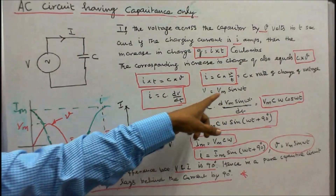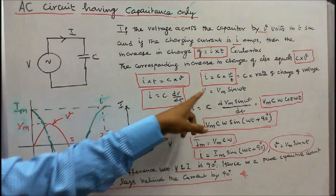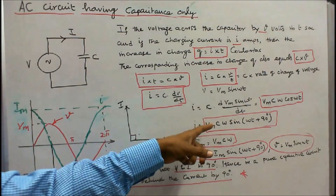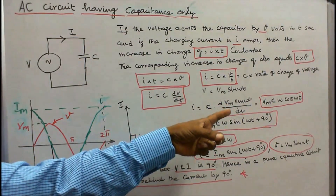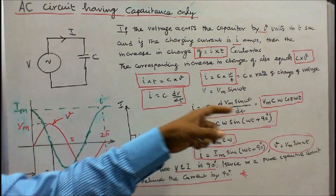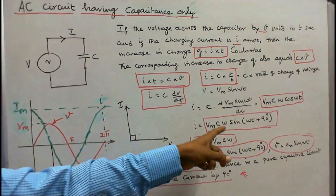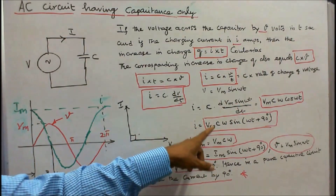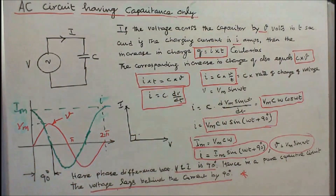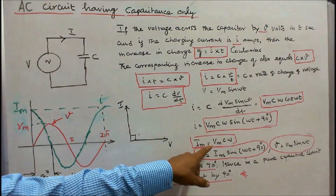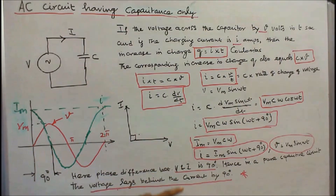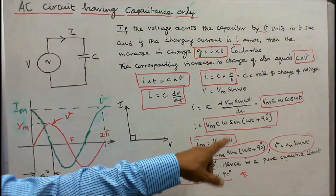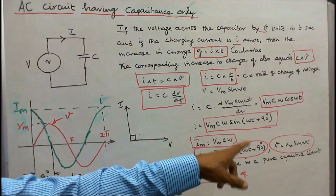We know V = Vm × sin(ωt). Substituting into the equation: I = C × d(Vm sin ωt)/dt = Vm × C × ω × cos(ωt). Since cos(ωt) = sin(ωt + 90°), we get I = Vm × C × ω × sin(ωt + 90°). Here Im = Vm × C × ω, so the instantaneous current i = Im × sin(ωt + 90°), and V = Vm × sin(ωt).